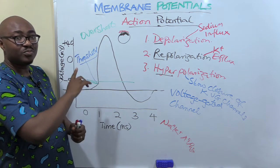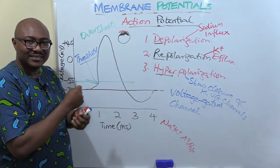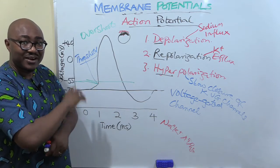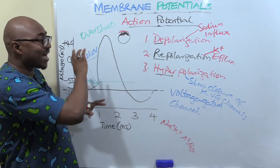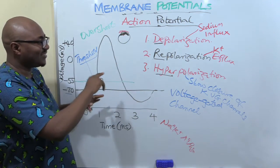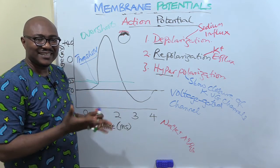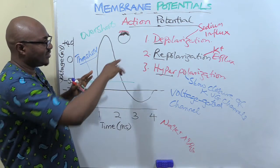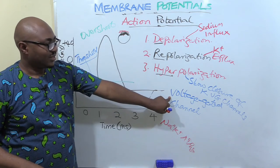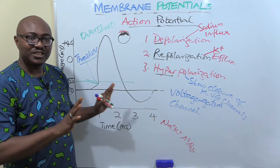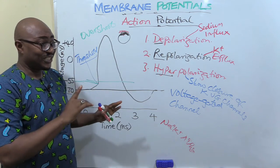Depolarization makes it more positive. There is still a lot to talk about in action potential — characteristics, all-or-none law, refractory period — these are things we need to settle down and discuss. For now, this is a very good start. Action potential has three stages: sodium influx causes depolarization, potassium efflux causes repolarization, and excitable tissues are special because of their voltage-gated channels for sodium and potassium. I'll see you in the next video.